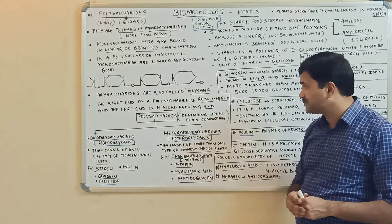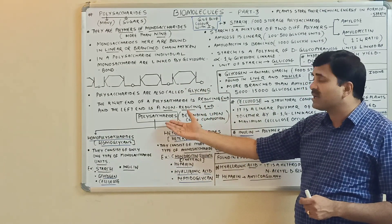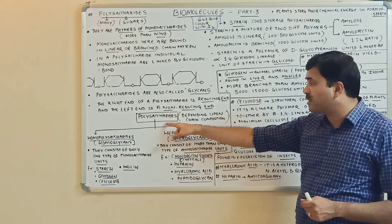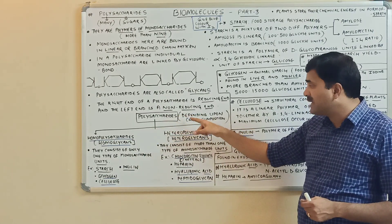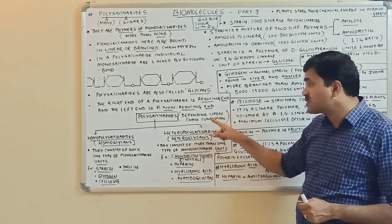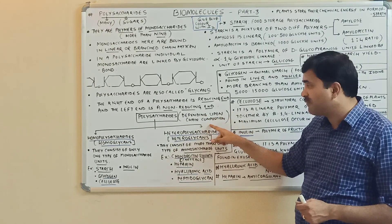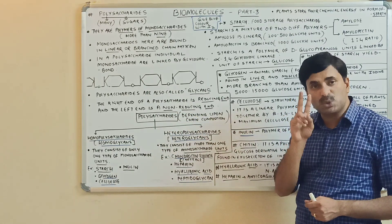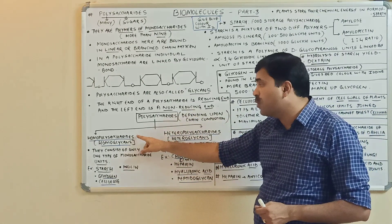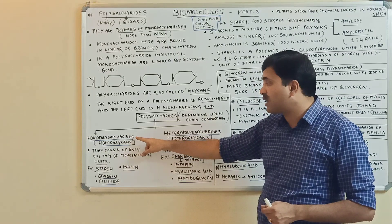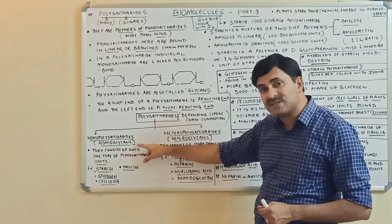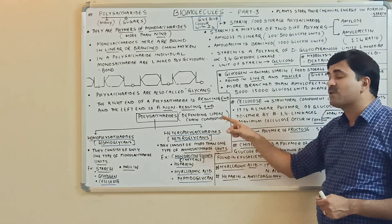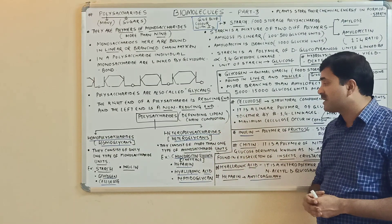The classification of polysaccharides depends upon the chain composition. Polysaccharides are categorized into two types: number one is homopolysaccharides, which are also called homoglycans, and the second category is heteropolysaccharides, which are also called heteroglycans.